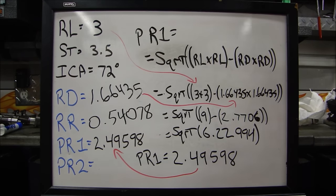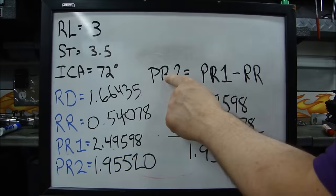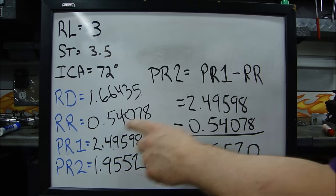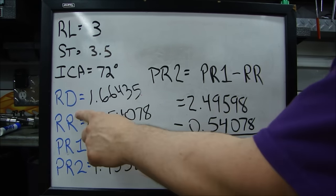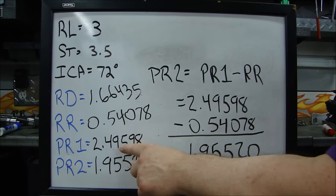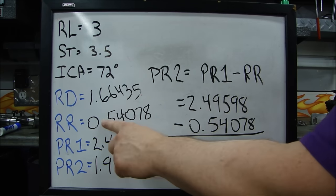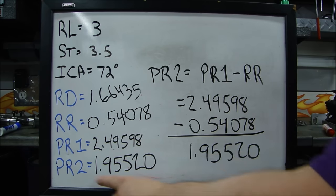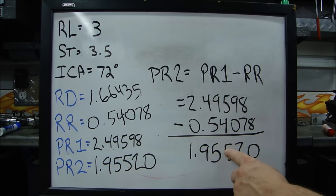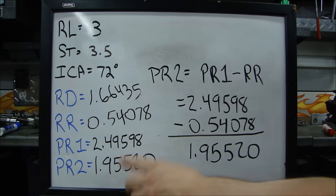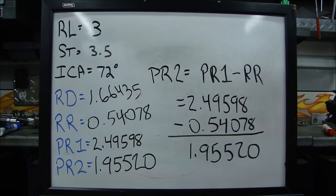There's our PR1. Now all we have to do is calculate our PR2. Now PR2 is simply PR1 minus our RR. So that's 2.49598 minus 0.54078. And our PR2 is 1.95520. Now using all of these numbers, we can go ahead and calculate our dynamic stroke.